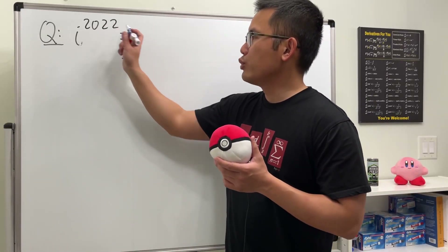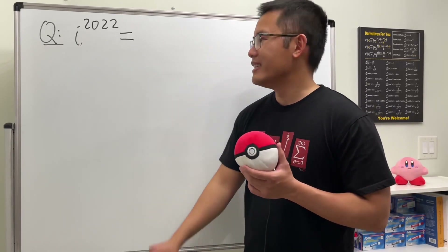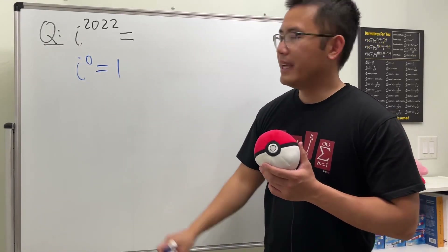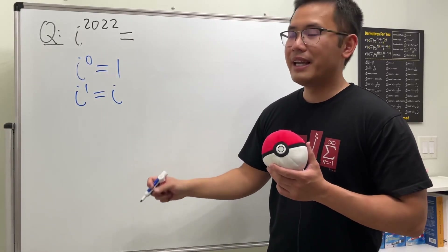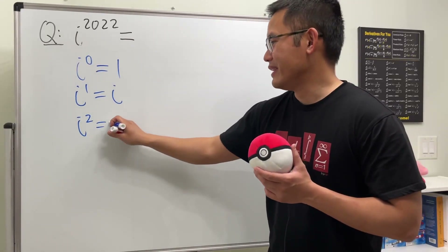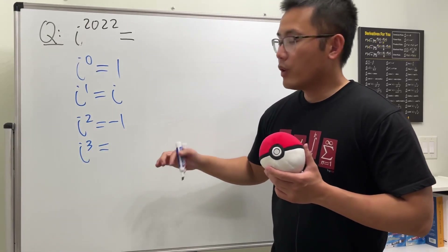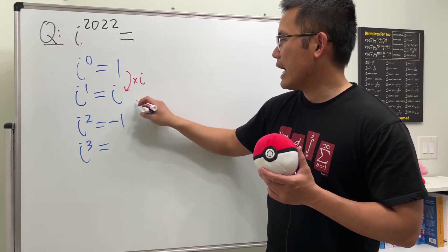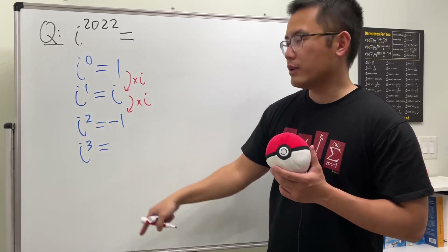We are going to find i to the 2022nd power. Let me show you the pattern for the powers of i, starting at i to the zero power, which is equal to 1. Next, i to the first power is just equal to i. Then i squared, by definition, is equal to negative 1. We can continue: i to the third power — what's happening is we multiply by i each time, because we increase the power by one.